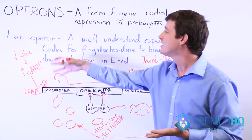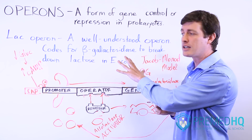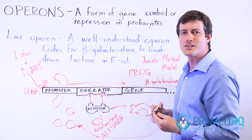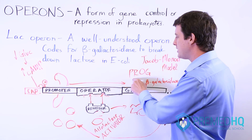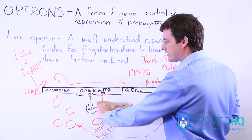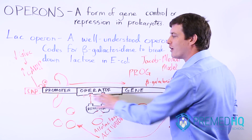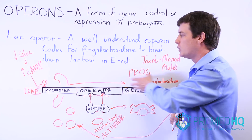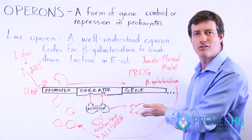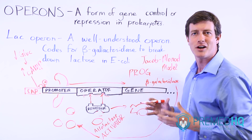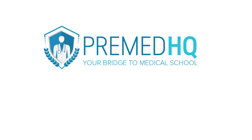Understanding the operon is something that will show up over and over again — it's probably the most popular way to test gene control because it's such a direct process. The PROG: if the repressor is in its original form, it blocks transcription; if the activator is present, the repressor no longer blocks and the polymerase is free to go, producing the primary transcript that's converted into a protein via translation, allowing the cell to directly respond to whatever environment it's in.